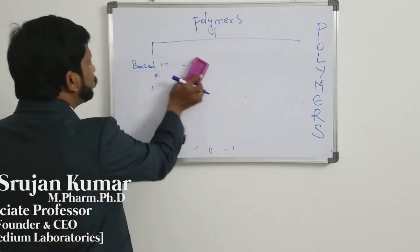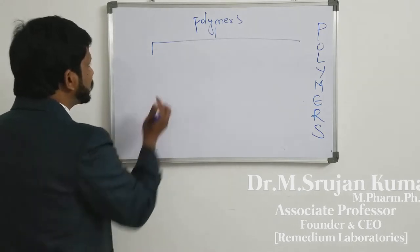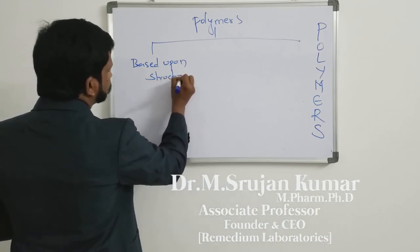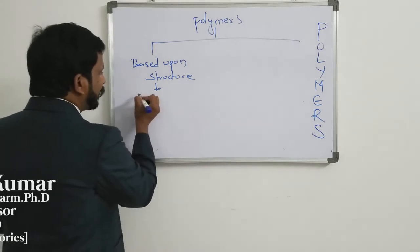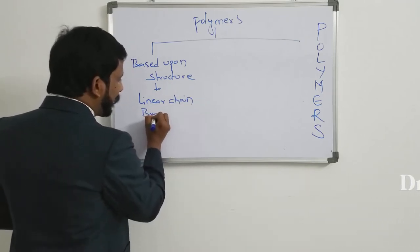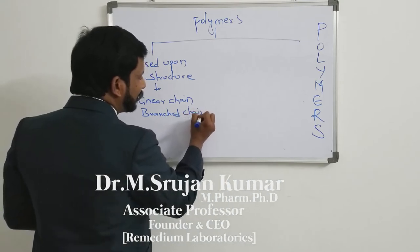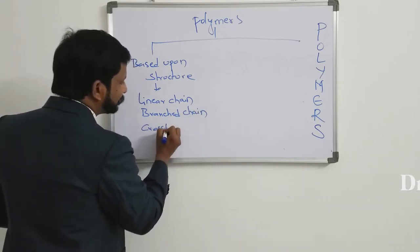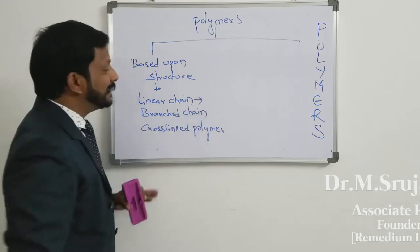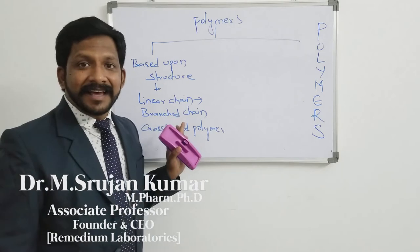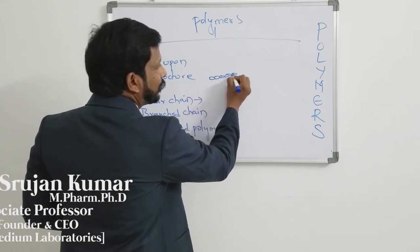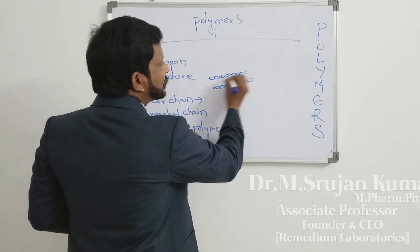This is the first type of classification, based upon origin of source. Now the second classification is based upon structure. Based upon the structure, it is divided into three types. One is linear chain polymer, next branch chain polymer, and next cross link. What do you mean by linear chain? Linear chain is nothing but it has repeating units of monomers arranged in a straight line.